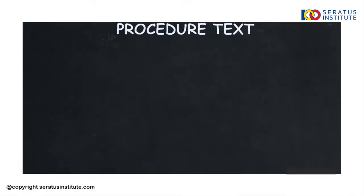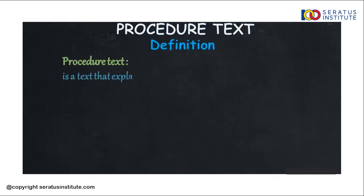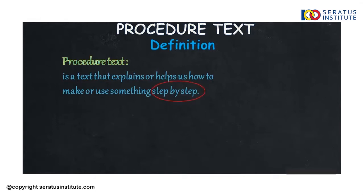Let's go to the first part: the definition of procedure text. So, apa sih arti dari procedure text? Procedure text is a text that explains or helps us how to make or use something step by step. Jadi, procedure text adalah text yang memuat bagaimana cara membuat sesuatu atau menggunakan sesuatu step by step, langkah demi langkah.